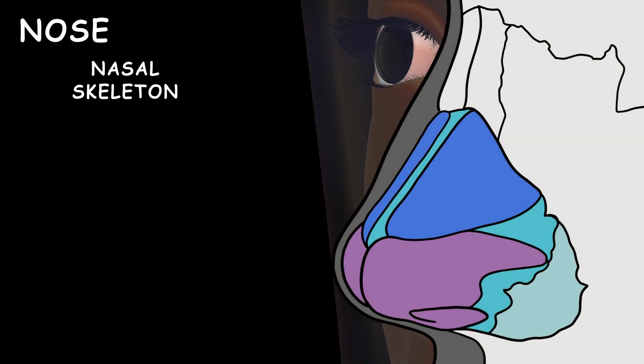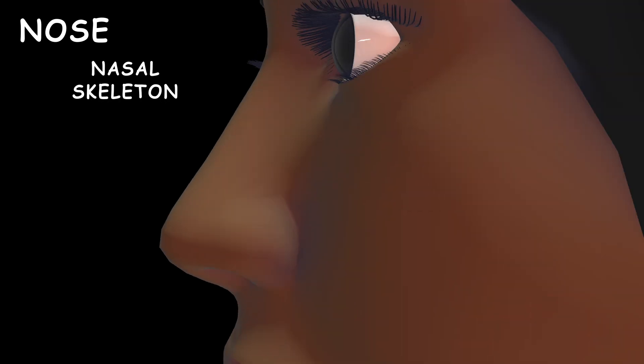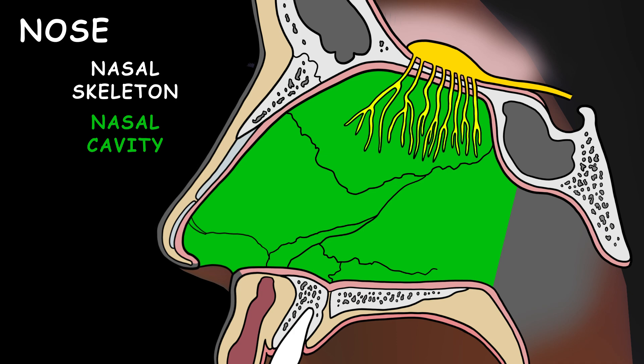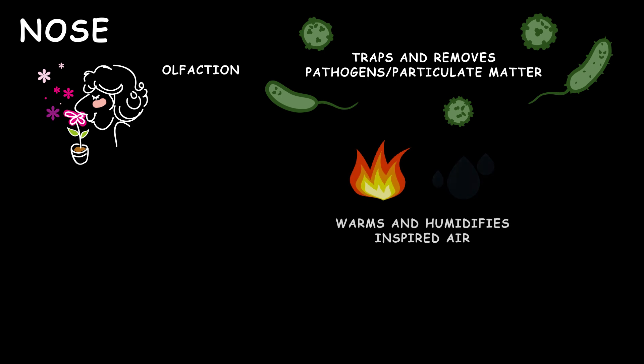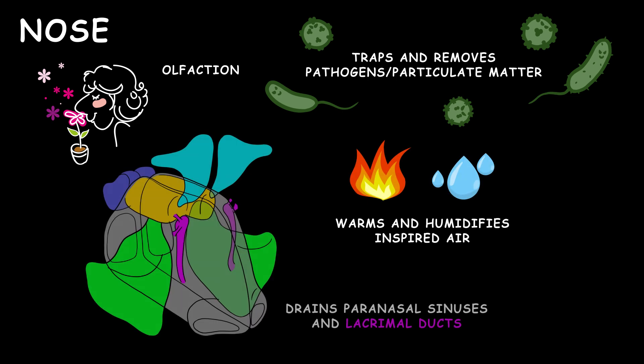The nose consists of the nasal skeleton housing the nasal cavity, the most superior part of the respiratory tract. In addition to olfaction, the nasal cavity traps and removes pathogens and particulate matter from inspired air, warms and humidifies this air, and drains the paranasal sinuses and lacrimal ducts.